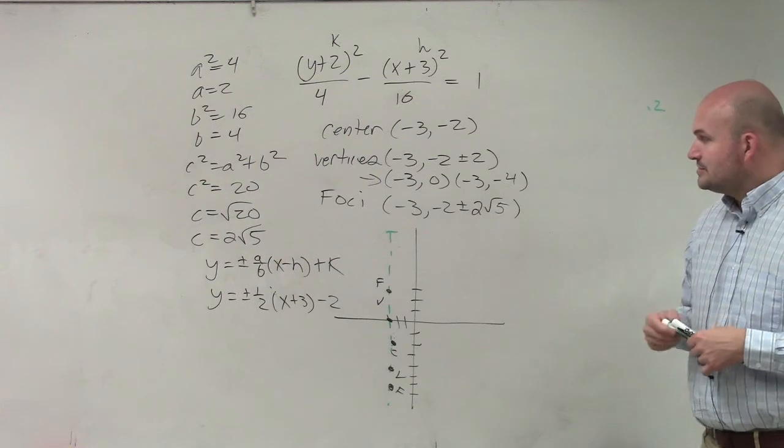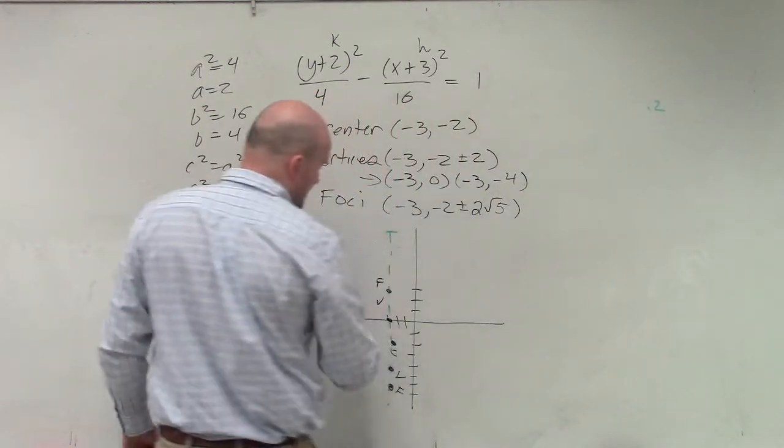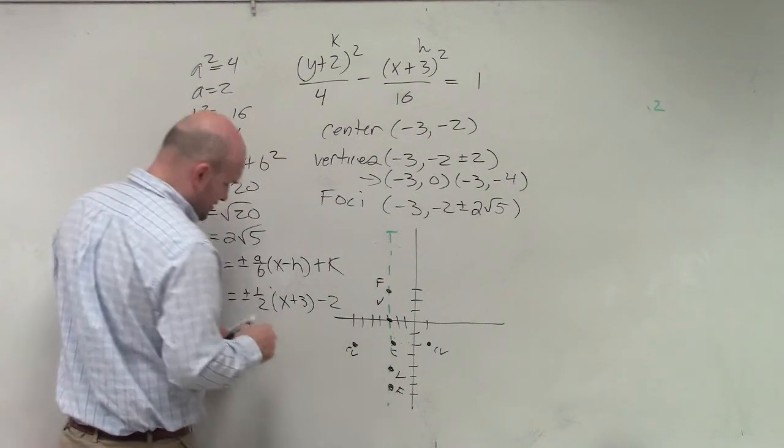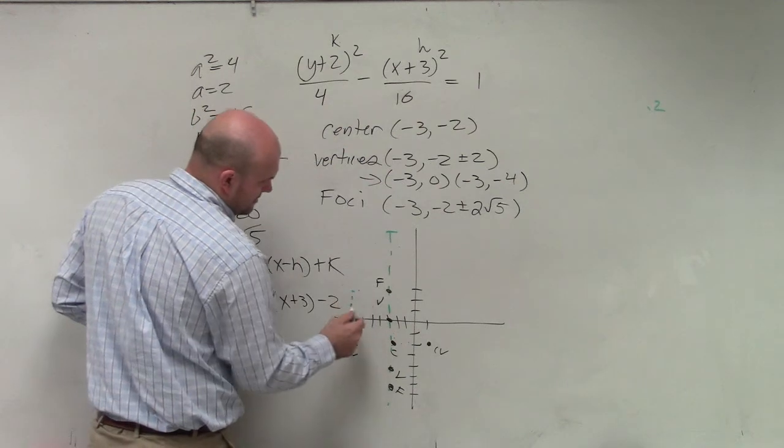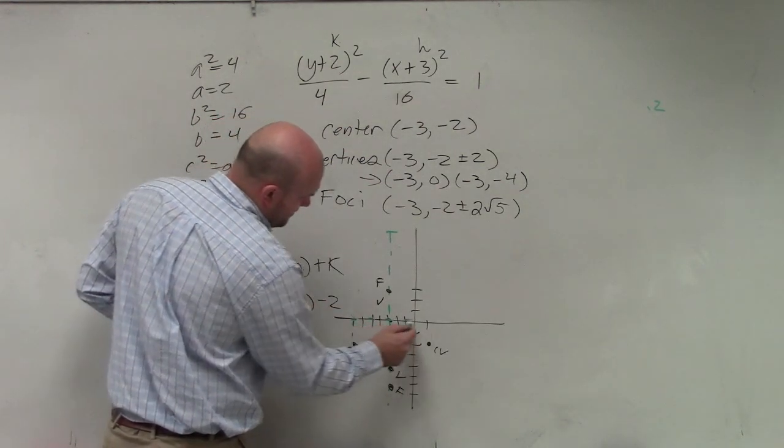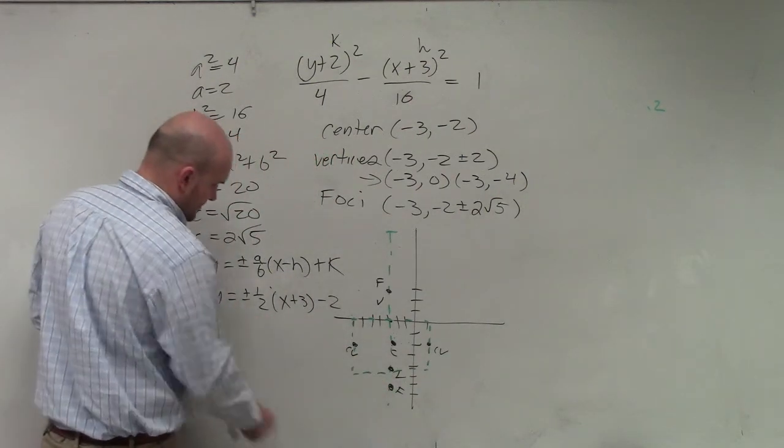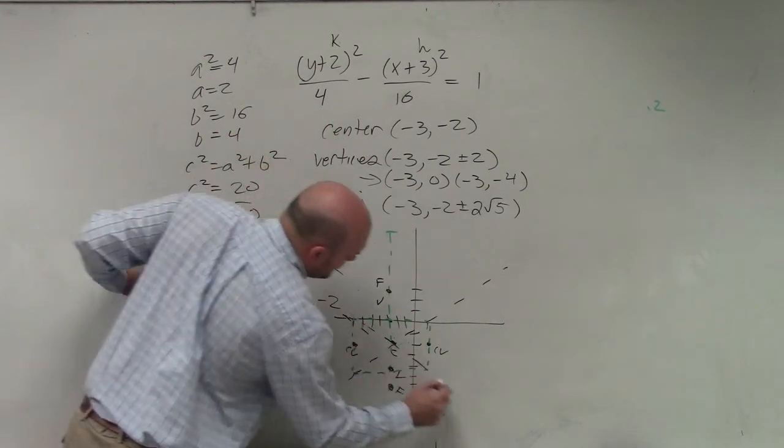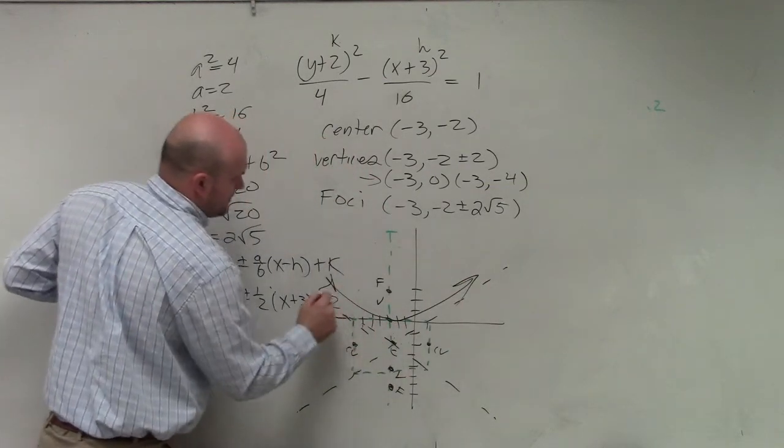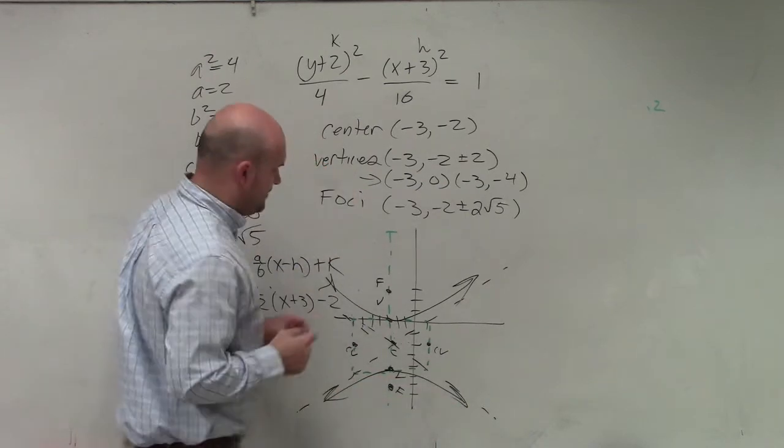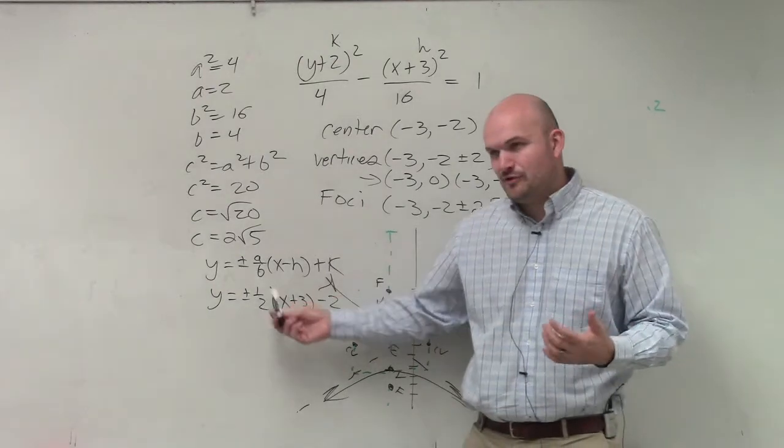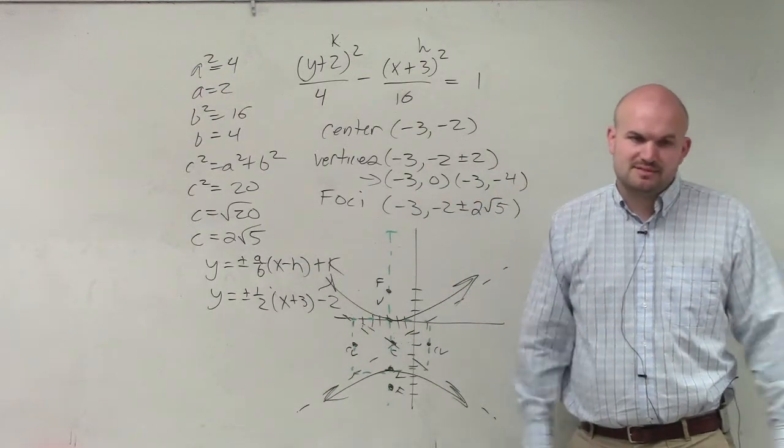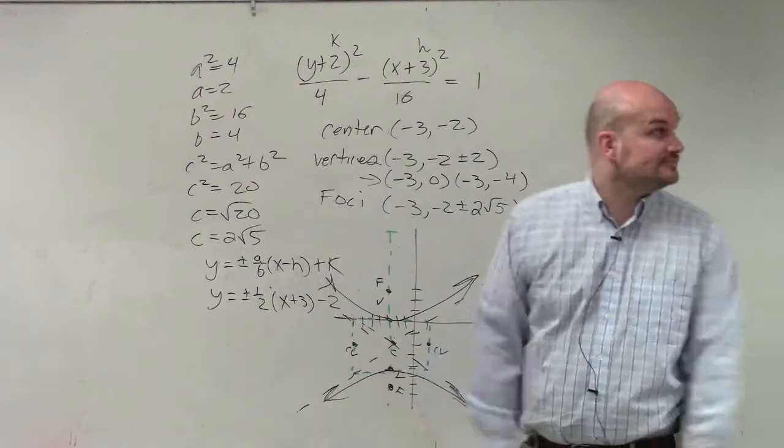So I think the easiest thing to do is just, all I'm asking you to do is sketch the graph. So let's just find your co-vertices, which are at 4 away, along your conjugate axis. So 1, 2, 3, 4. 1, 2, 3, 4. And let's just make a box with your co-vertices. Wait, and there's my vertices down there. And now, now I have a general idea where everything goes. Do you guys see how, even though I'm going to ask you for an equation of an asymptote, I think the easiest thing to do is just use the box method to graph the asymptotes, right? Sometimes it's not. But that's it. That's all I got for you.